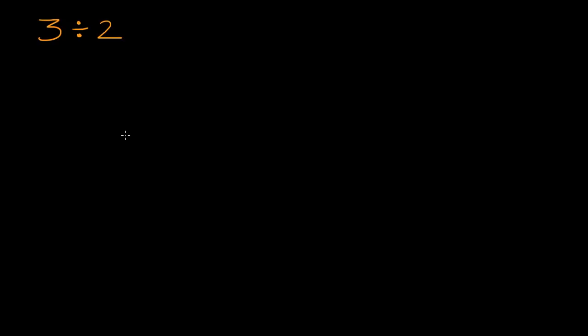Now let's try to work this together. And like all things in mathematics, there's multiple strategies that you can use to figure out what three divided by two is. One strategy is to rewrite this as a fraction. So three divided by two, you could write that as three over two.